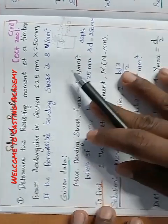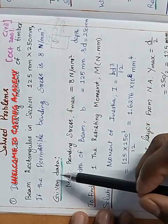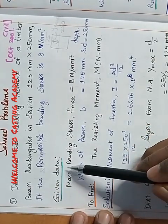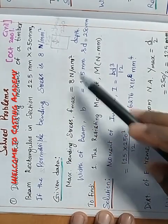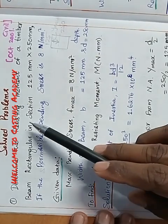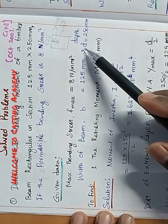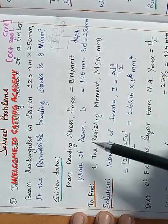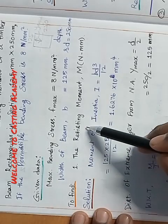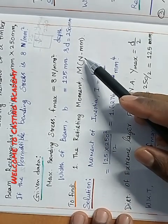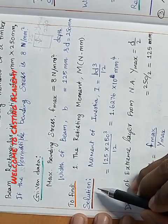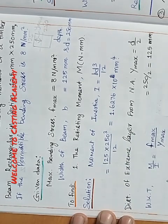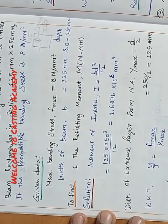When solving problems, read the problem twice and then write down the given data first. Maximum bending stress Fmax equals 8 Newton per mm square. Cross-sectional dimensions: breadth B equals 125 mm, depth D equals 250 mm. We want to find the resisting moment M. The formula is M/I = Fmax/Ymax.